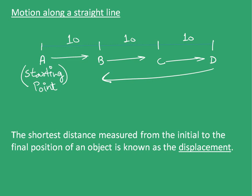In this example, the total distance covered is 10 plus 10 plus 10 plus 20, that will be equal to 50 kilometers. Now here, we define a term displacement. Displacement is the shortest distance measured from initial to the final position of an object.